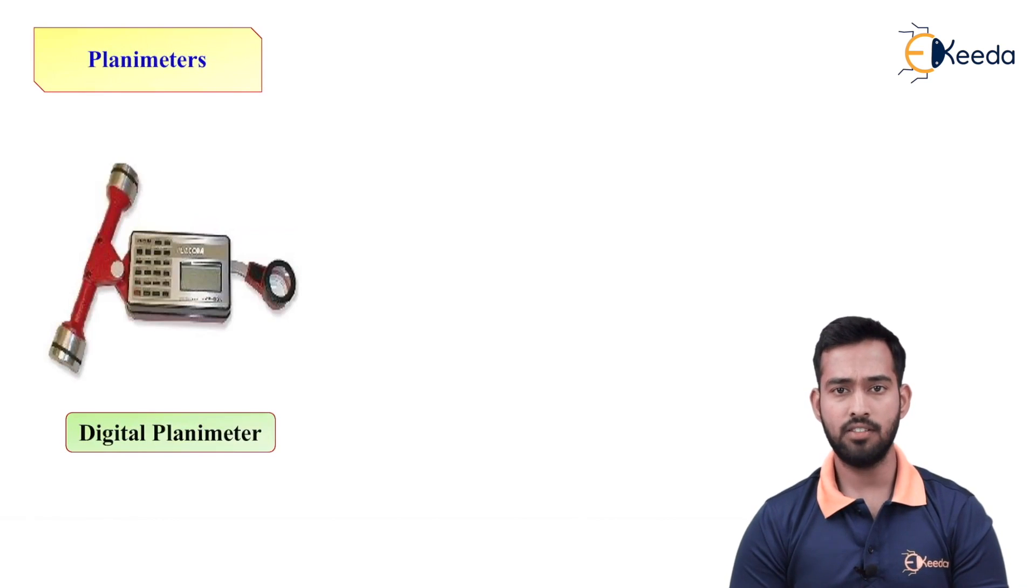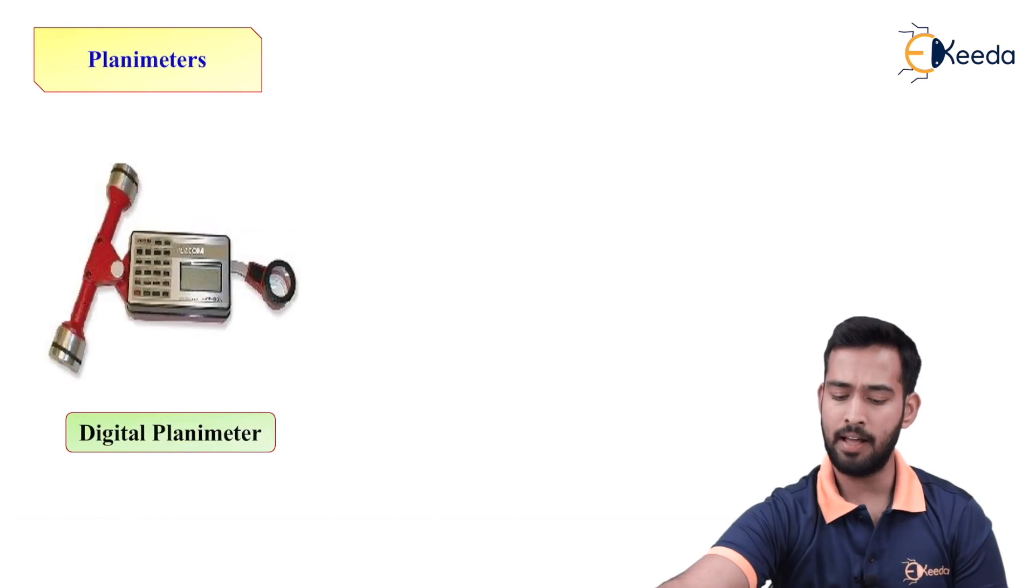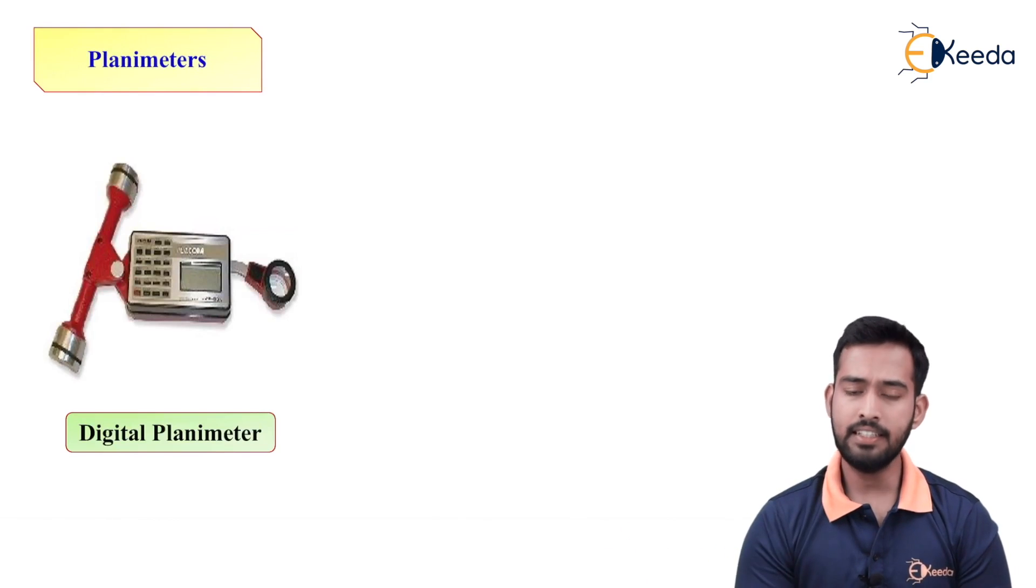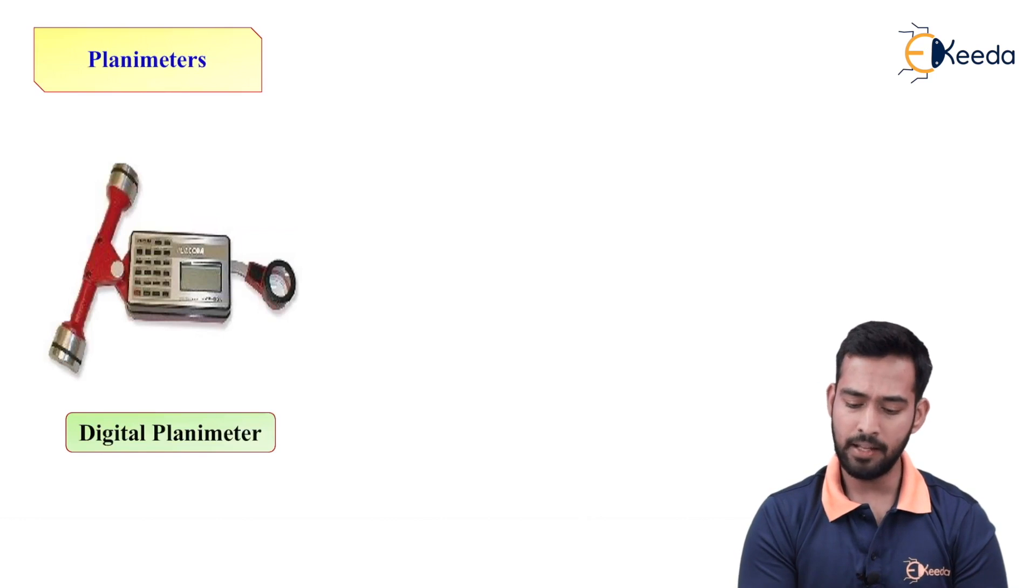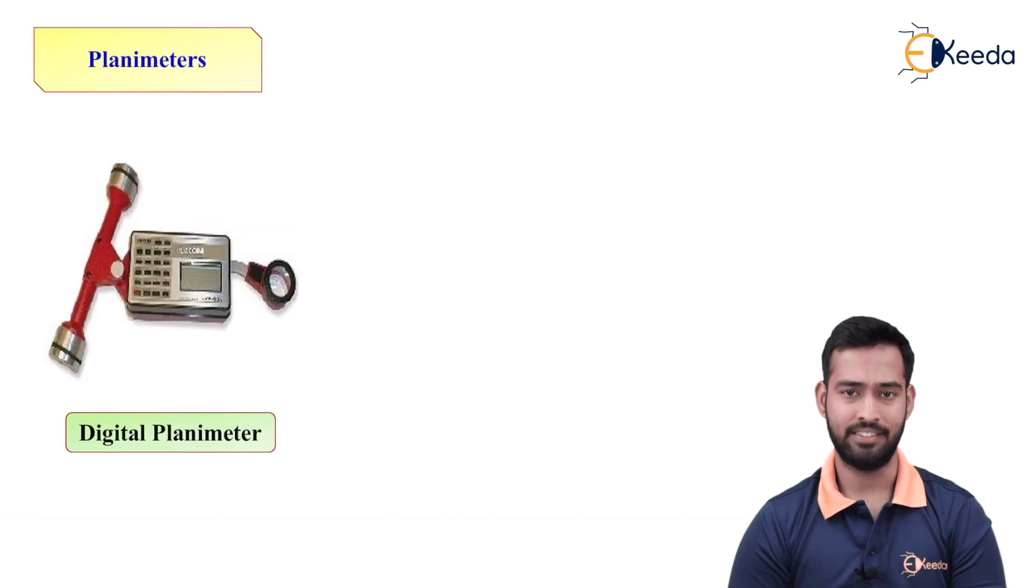Now, there are two types of planimeter. First, as you can see, a digital planimeter. Digital planimeter, as the name indicates, it has digital display over which will get direct reading.